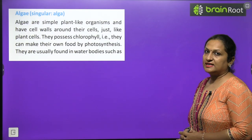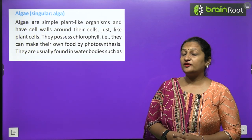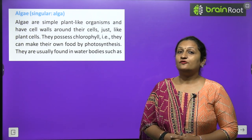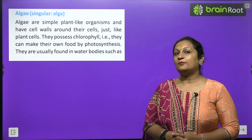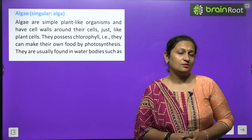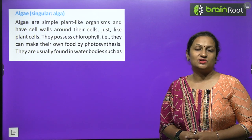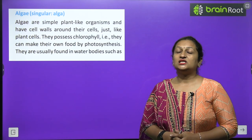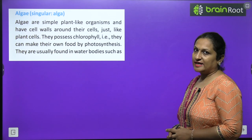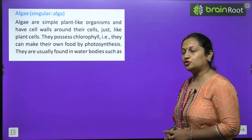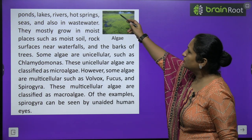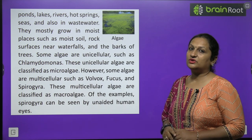Algae — singular: alga. They are simple plant-like organisms which have chlorophyll, so they are green in color. Being green, algae can manufacture their own food. However, algae does not have true roots or true stems, which is why we do not place them in the plant category. Algae are found in water bodies such as ponds, lakes, and rivers — the green-colored layers you see on the surface of rivers are actually algae. They also grow on moist soil, on rock surfaces, near waterfalls, and on the barks of trees.